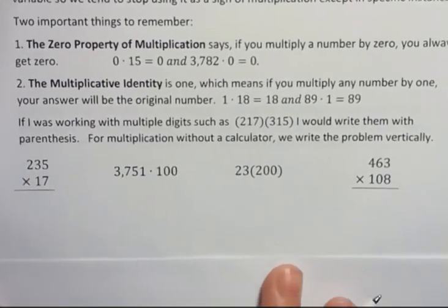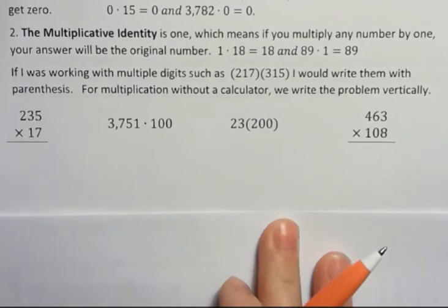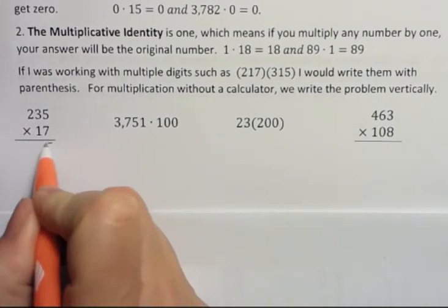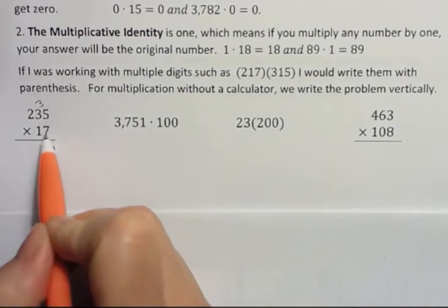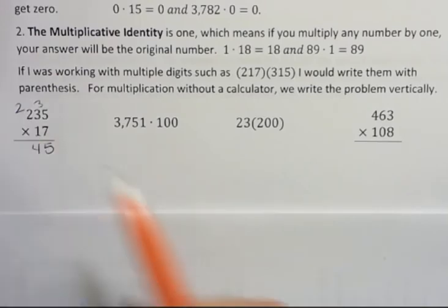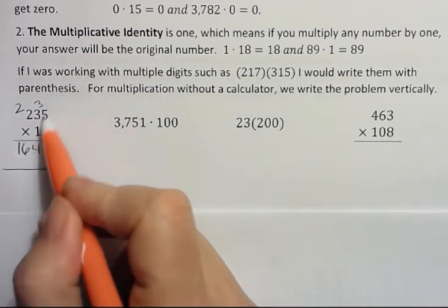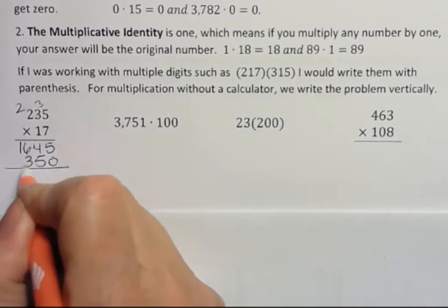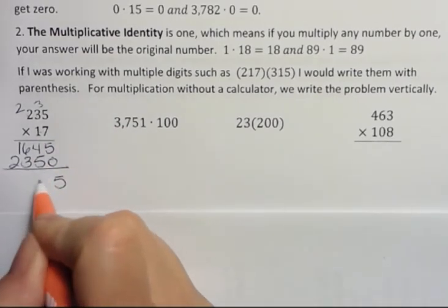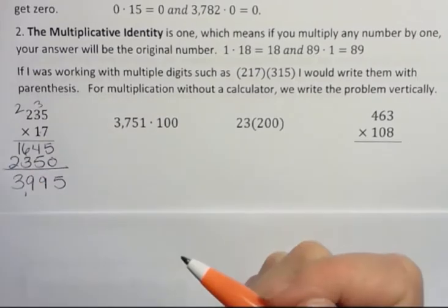And I'm going to go through a couple of examples of multiplication. Again, this may be something that you don't need. You can fast forward if you need to, or you can watch it if you don't quite remember. The way I'm going to do it, 7 times 5 is 35. We put the 5 and carry the 3. 3 times 7 is 21, plus 3 more is 24. Carry the 2. 2 times 7 is 14, plus 2 is 16. And then I'm going to put a 0 before I start my second number. 1 times 5 is 5, 1 times 3 is 3, and 1 times 2 is 2. And finally, I just add straight down, 5, 9, 9, 3. 3,995 is my final answer.